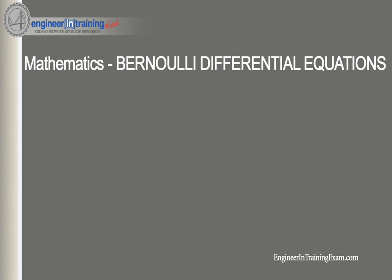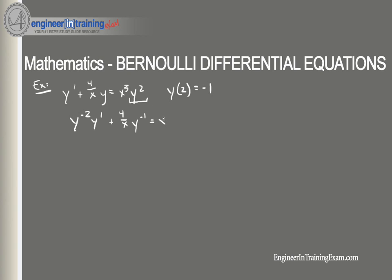Let's run through an example to illustrate this. We want to solve the initial value problem: y prime plus (4 divided by x) y equals x cubed times y squared, with initial condition y(2) equals negative 1. This almost is a linear differential equation, but is not because of the y squared term.